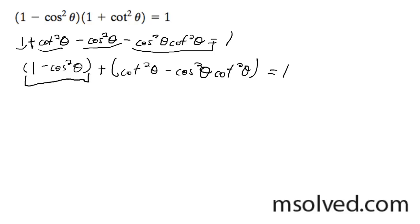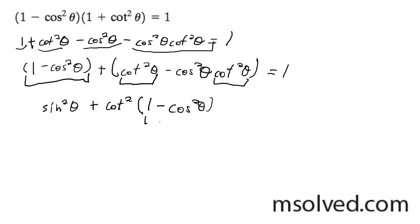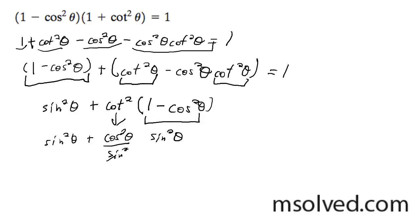Now this is a trig identity. This 1 minus cosine squared theta is equal to sine squared theta. And I can pull out a cotangent squared theta from the group, getting cotangent squared theta times 1 minus cosine squared theta, which is also sine squared theta. So I get sine squared theta plus cotangent squared theta, and I'm going to convert cotangent squared theta to cosine squared theta over sine squared theta. The sine squareds cancel out, and you get sine squared theta plus cosine squared theta, which equals 1.